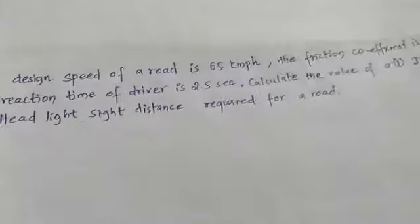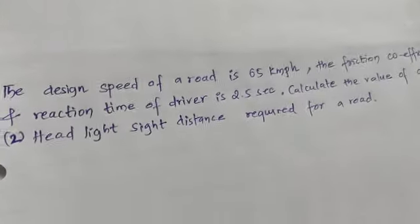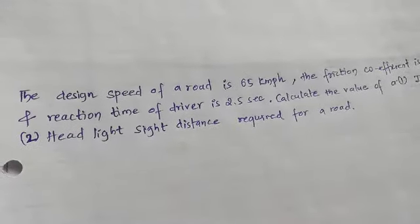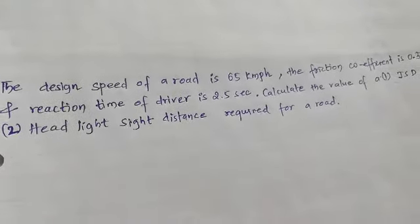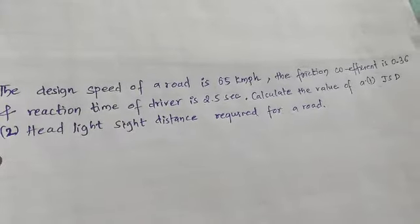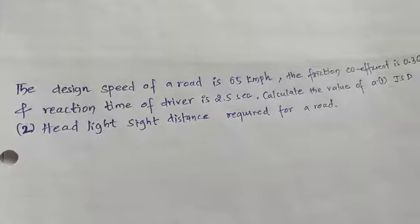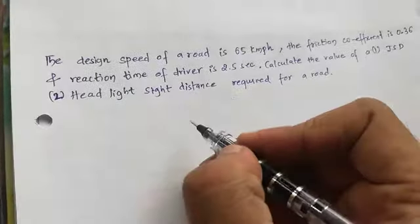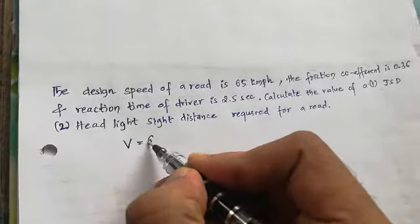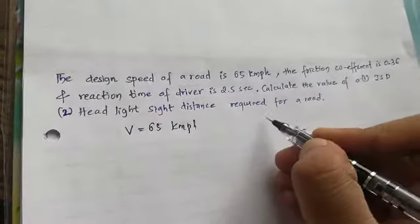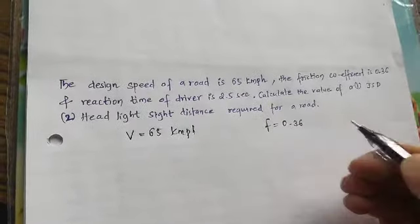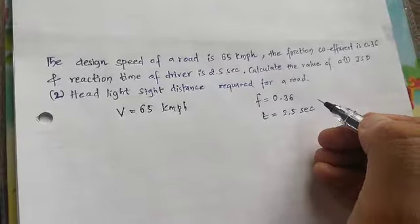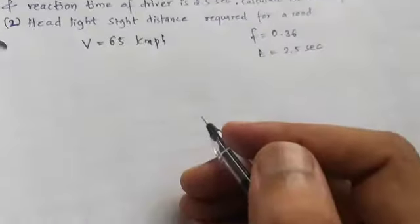Moving to the next problem. The design speed of the road is 65 kmph, the friction coefficient is 0.36, and the reaction time of driver is 2.5 seconds. Calculate the value of first, ISD (intermediate sight distance), and second, headlight sight distance required for the road. Let us write down the given things: V is 65 kmph, F is 0.36, t is 2.5 seconds. I'll solve this using the kmph formula.